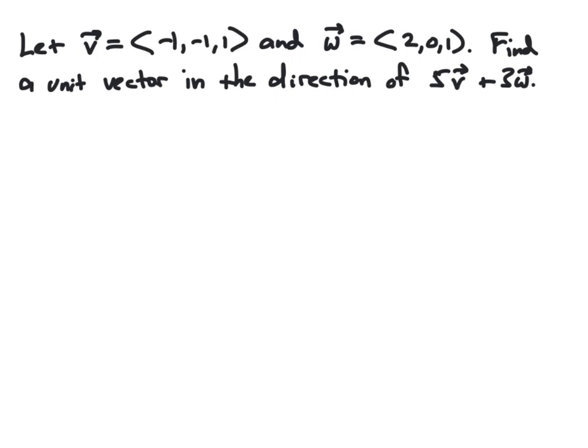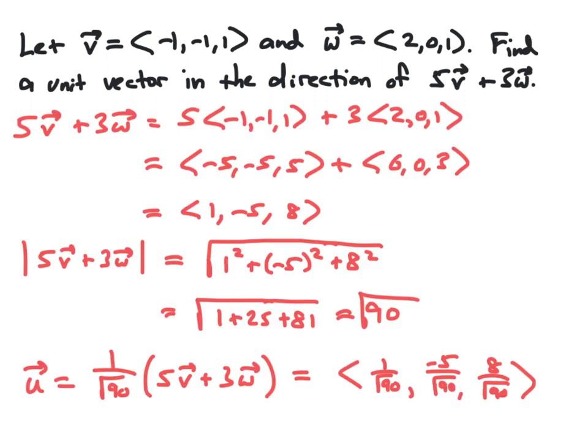Here we are given a vector V with component form (-1, -1, 1) and a vector W with component form (2, 0, 1). We are asked to find a unit vector in the direction of 5V plus 3W. To find the desired vector, we first compute 5V plus 3W by scaling V by 5 and W by 3 and adding those vectors together, giving the resulting vector (1, -5, 8).